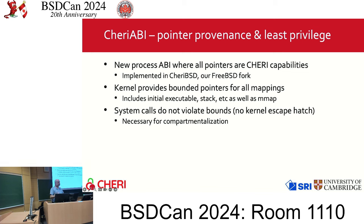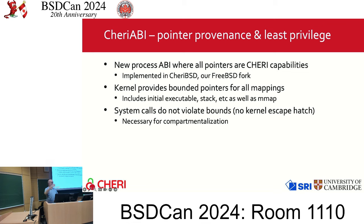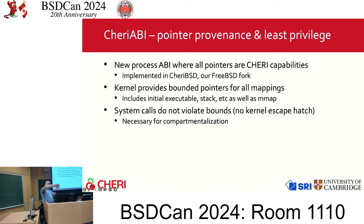One key feature of CHERI ABI is that system calls do not violate capability boundaries — there's no kernel escape hatch, at least no deliberate one. The way we use copy-in and copy-out to access user space means there is no escape hatch. This is necessary to implement least privilege and make it all work, and it's also necessary for compartmentalization, where you might have two completely disjoint things running in your address space that you don't want interfering with each other.